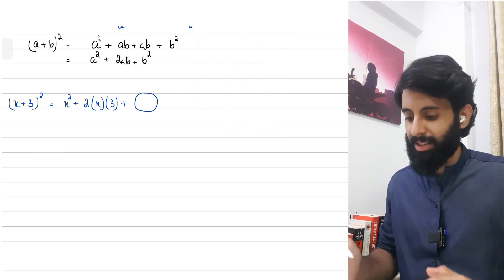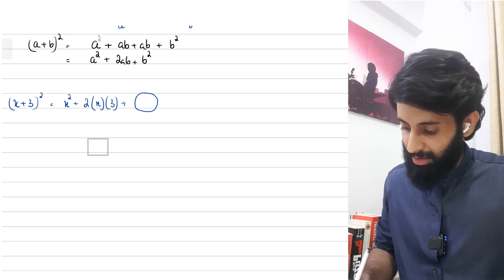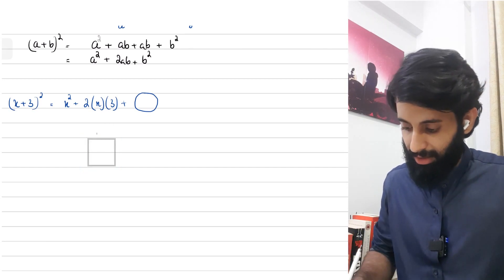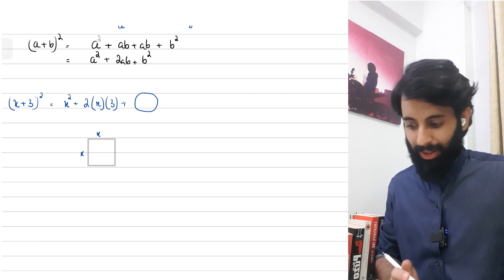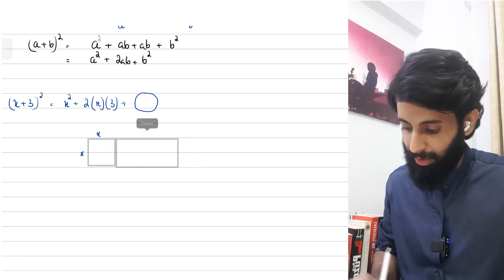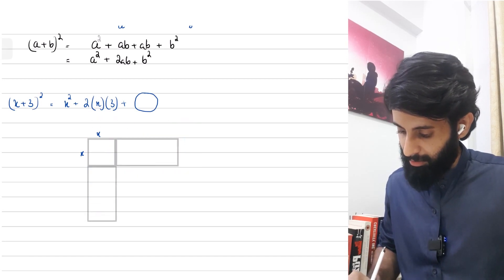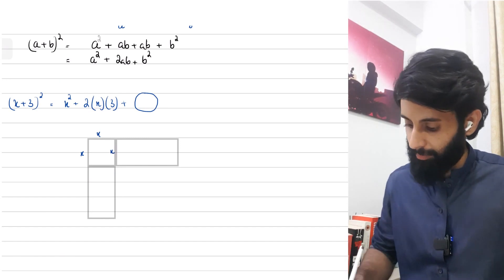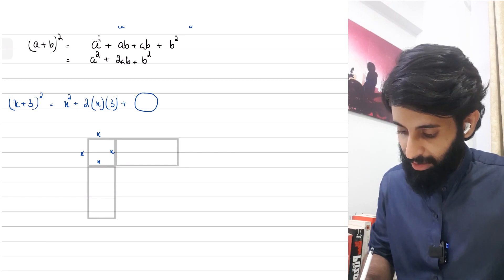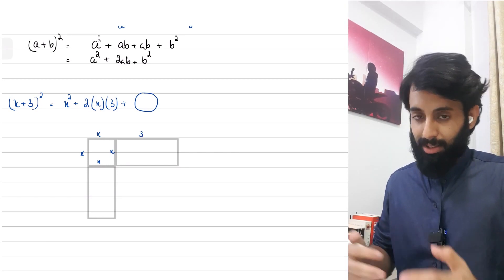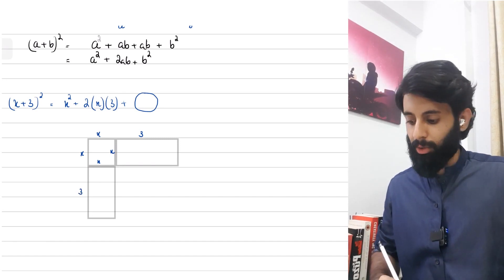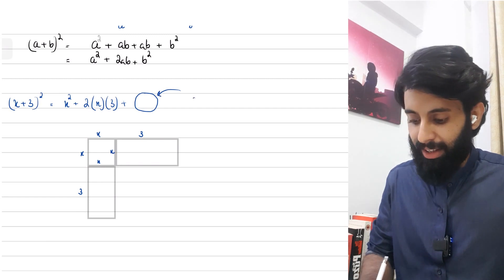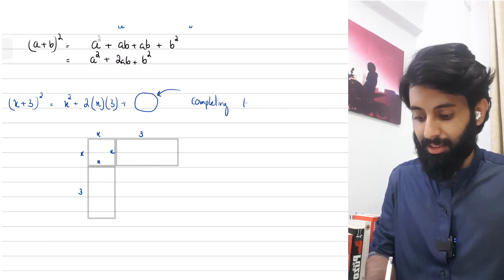x² means you have a square with dimensions x by x. Two times x times 3 means you're attaching two rectangles with dimensions 3 by x to this square — one at the right and one at the bottom — each with width x and length 3. So this length is also going to be 3.